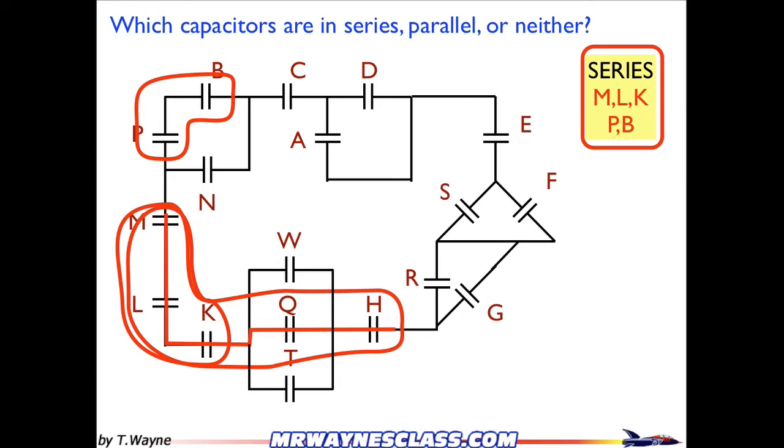And the junctions will split up the current. And so in doing that, it doesn't make it a series anymore. Because remember, series means one after another, no junctions in between. So the current can just flow straight from one through the other. With the charge in this case, I guess.